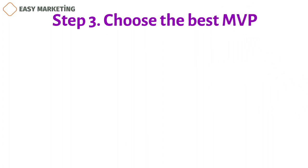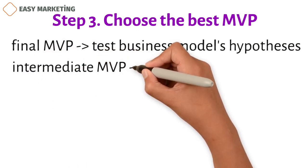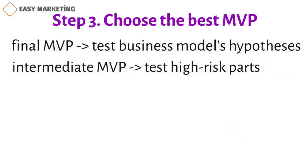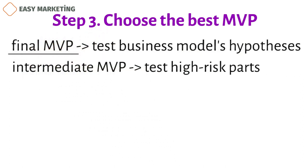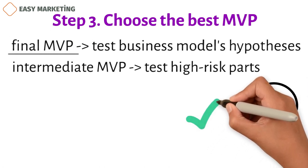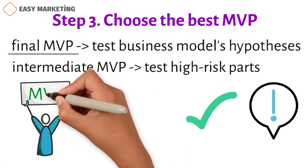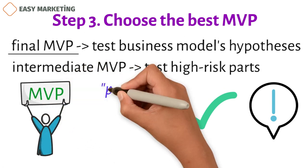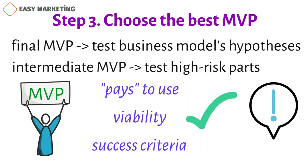Step 3. Choose the best MVP. According to Vlaskovits, the final MVP tests the business model's hypotheses, while the intermediate MVP tests its high-risk parts. When you choose your final MVP, think about the most important parts of the product you need to give each stakeholder in order to get the results you envisioned in the previous stage. Describe the MVP in its best form. In this stage, you must also say what the user pays to use the MVP and how you measure its viability or what your success criteria are.